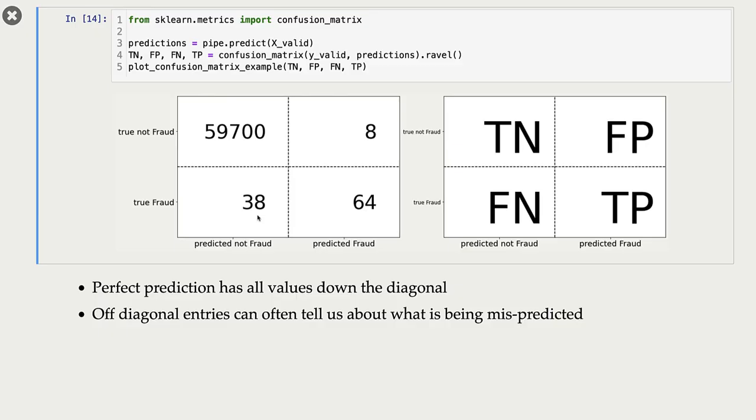So now we have a better understanding of the errors made by our logistic regression classifier. Note that these diagonal entries tell us about perfect predictions by our model, and off-diagonal entries tell us about what is being mispredicted.